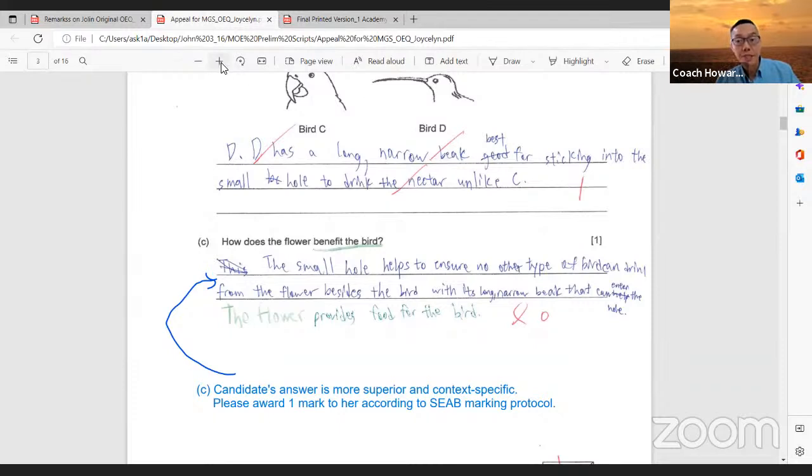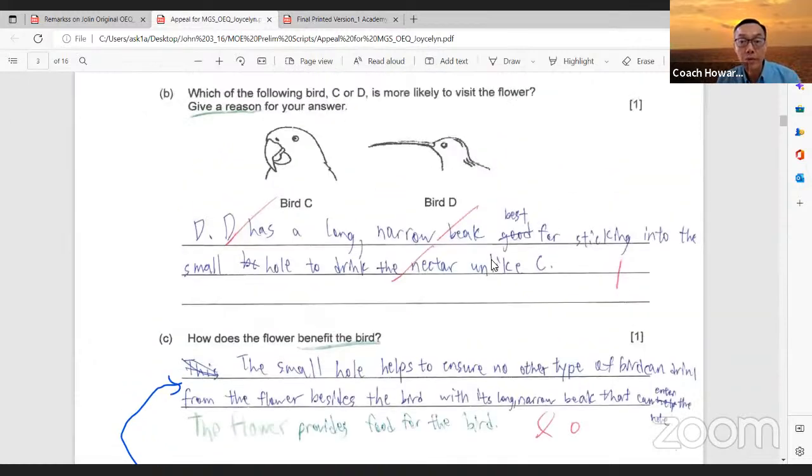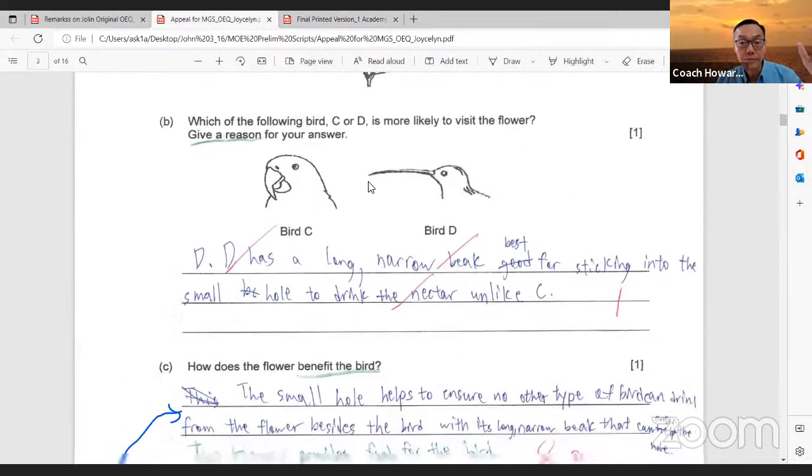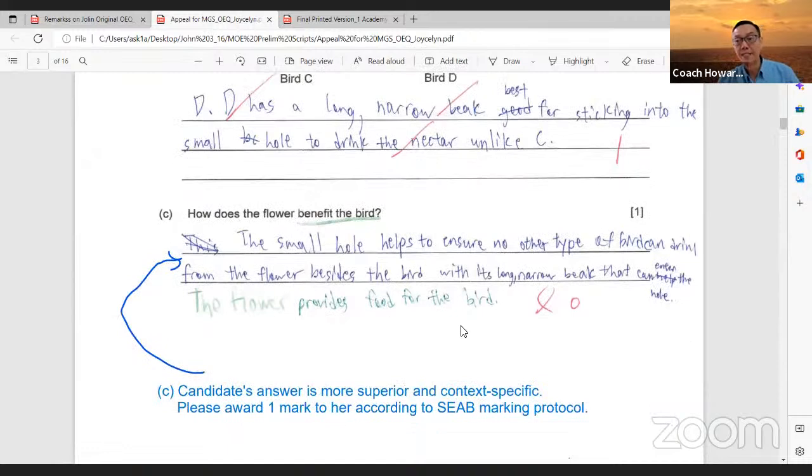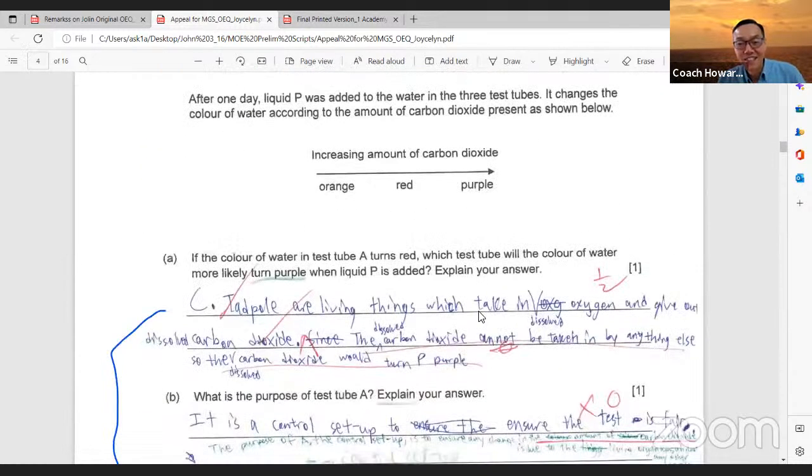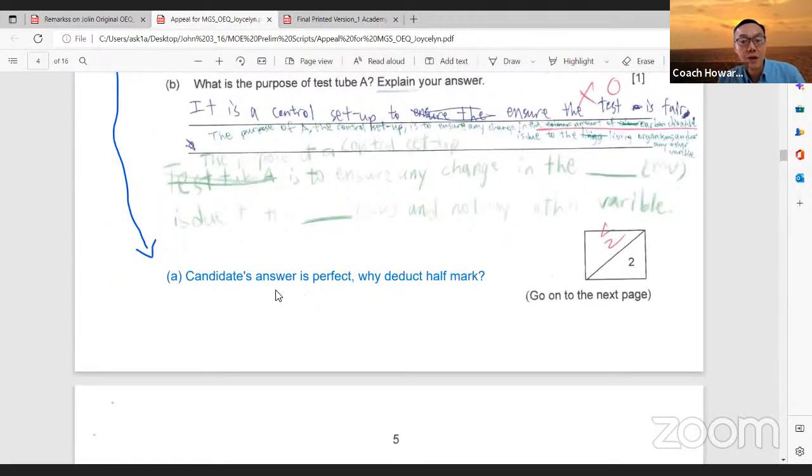I appeal to the school to award her the one mark according to SEAB marking protocol. I enlarged her handwriting here. She said that the small hole with this flower helps to ensure no other types of bird can drink from the flower besides the bird with its long narrow beak that can enter the hole. Isn't this a more precise context-based answer than this very generic answer provided? I really love her answer. So smart, this student.